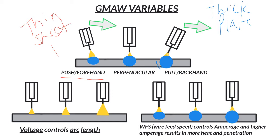Perpendicular is really just a gun straight up and down. It doesn't matter if you're going right or left because it's straight up and down. With the pull or backhand, you're shooting the arc back into the hot puddle, whereas with the push forehand, the arc is going towards the untouched, colder metal. So that is the weld direction.